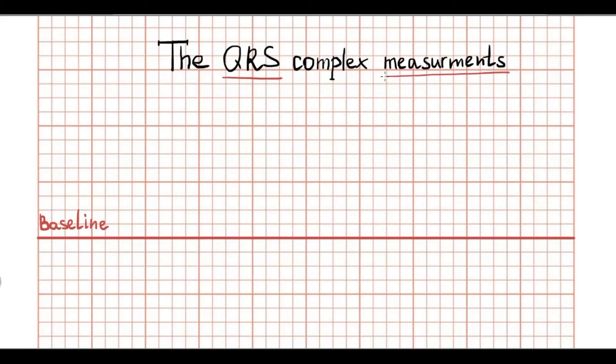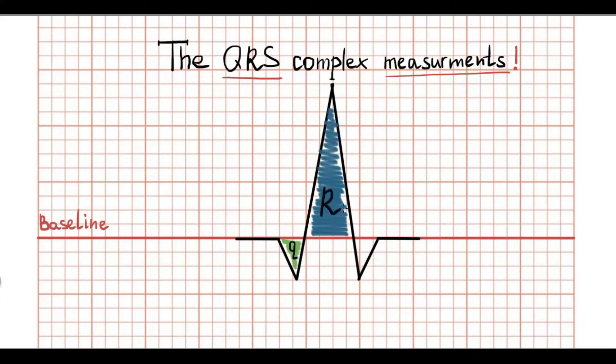The QRS complex represents ventricular depolarization and consists of three waves: Q, R, and S. However, not every lead QRS complex contains all of these waves. Every wave can be described in the context of amplitude and duration.